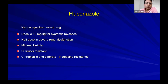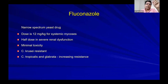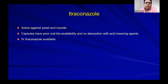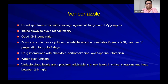Fluconazole remains the drug of choice for superficial and systemic Candida albicans infections — use a high loading dose for systemic mycoses. It should not be used for glabrata or krusei. Drug-drug interactions are common with azoles, especially voriconazole, which is important in oncology patients on multiple agents. Itraconazole covers yeast and mold including aspergillus but has poor GI tolerability, making it difficult to use despite being a cheaper option.